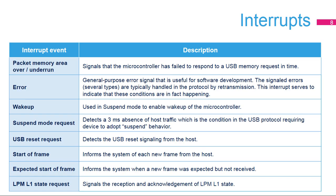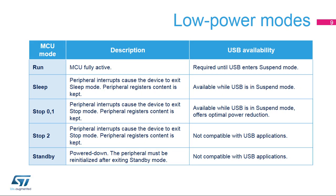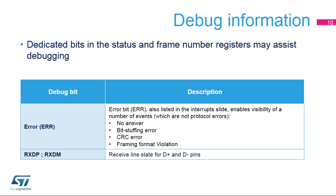The USB device controller generates interrupts in different circumstances, which generally require handling by software. The first two listed interrupts cover various error and warning conditions. The remaining interrupts correspond to normal USB protocol events. The USB peripheral is fully active in run mode. After a suspend event, sleep mode and also stop 0 and 1 modes are available. Stop 2 and standby mode should not be used. Some debug help is available using a single status bit, which corresponds to an interrupt event.